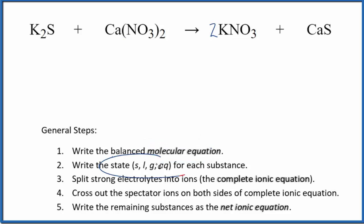Next, we need to write the state for each substance. That's going to look like this. So nitrates, they're going to be soluble. Compounds with the nitrate ion, very soluble. And compounds with potassium, they're most often soluble as well.